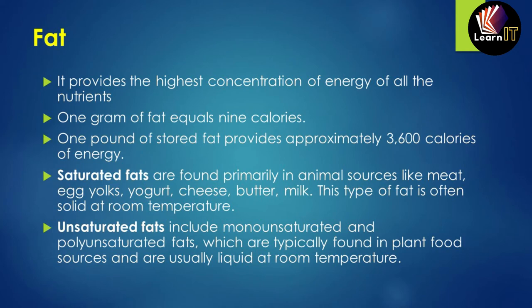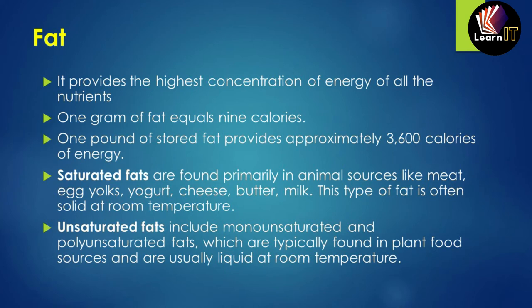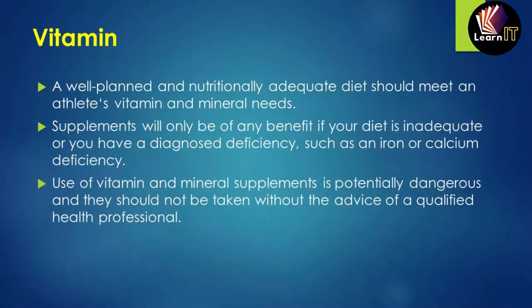Fat is divided into two kinds: saturated and unsaturated fats. Saturated fats are found primarily in animal sources like meat, eggs, yogurt, cheese, butter, and milk; they are solid at room temperature. Unsaturated fats are made up of mono-unsaturated and polyunsaturated fats found in plant sources and are usually liquid at room temperature, such as cooking oils. Ghee is an example of saturated fat.